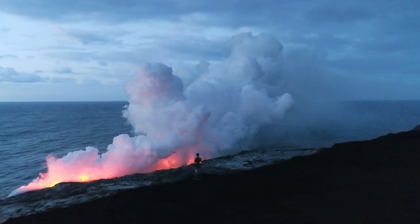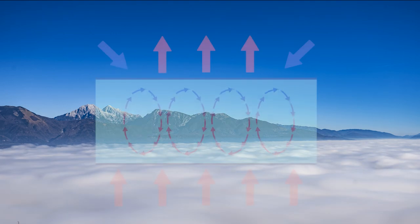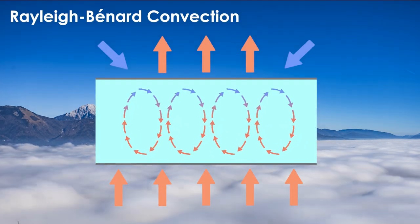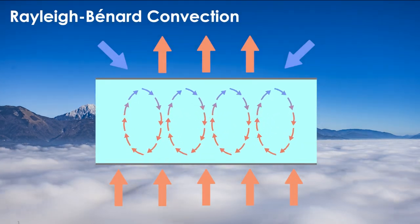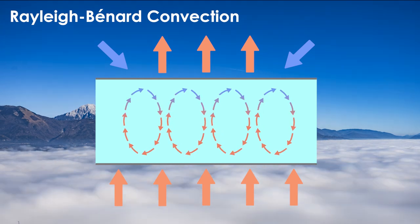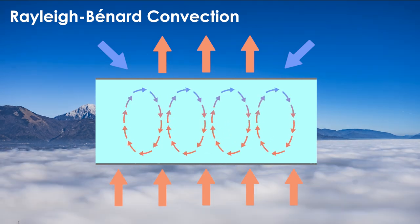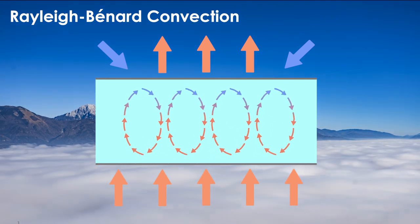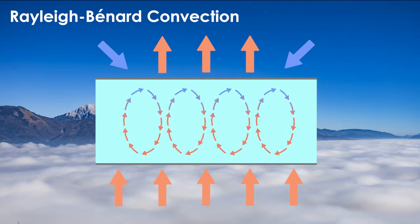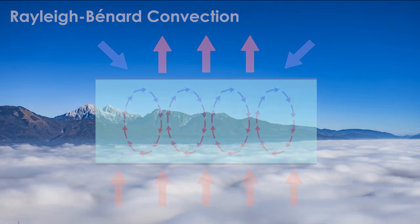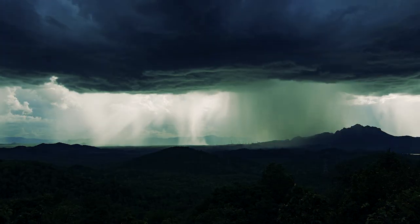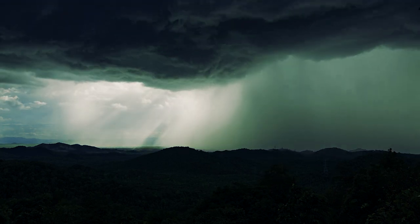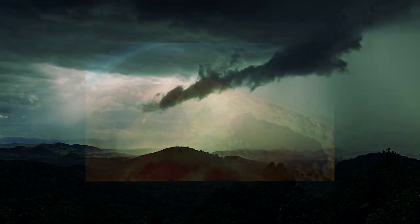In this video, we're simulating a phenomenon known as Rayleigh-Bénard convection, which occurs when a fluid is heated from the bottom and cooled from the top. Depending on the temperature difference, geometry and fluid properties, the system will naturally set up metastable or unstable circulation currents. In nature, this phenomenon can lead to severe weather events like downbursts, microbursts and derechos.